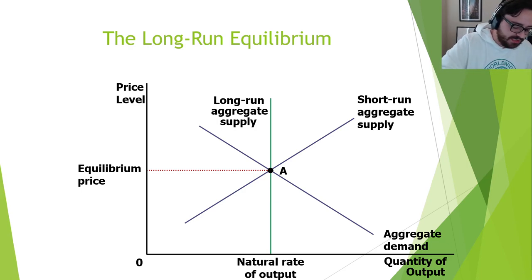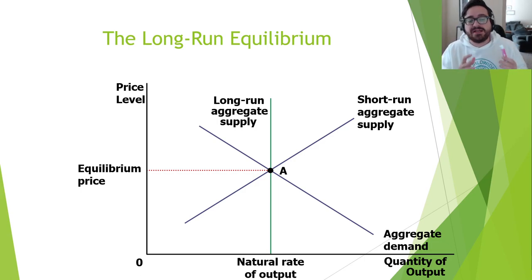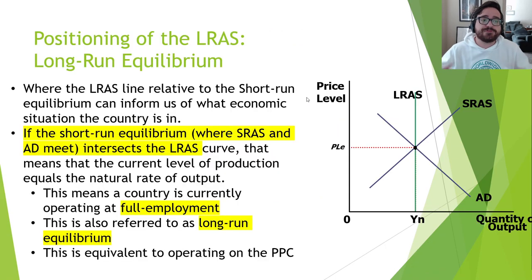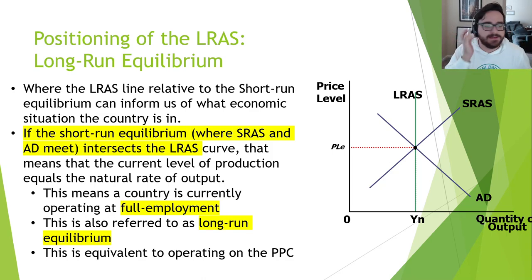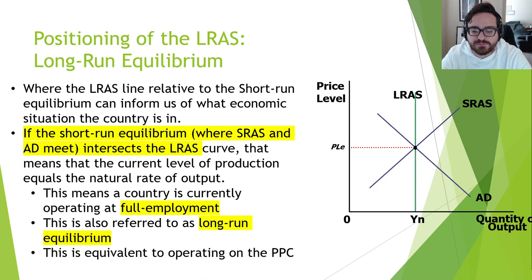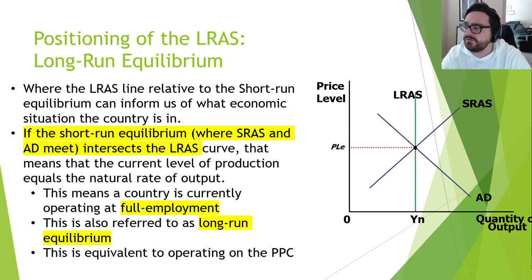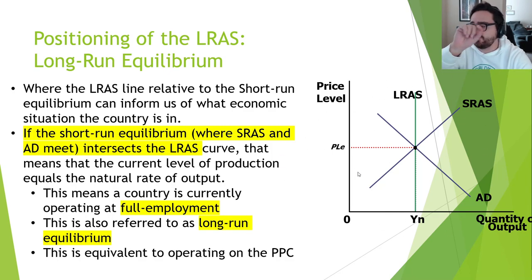This is long-run equilibrium. Your economy won't always be drawn this way — LRAS can be in different positions relative to the AD and SRAS curves. Long-run equilibrium means your current level of production equals the natural rate of output — the economy is doing great, producing exactly how much it should be.